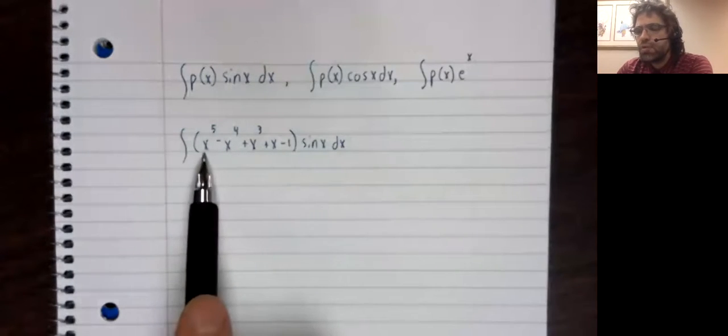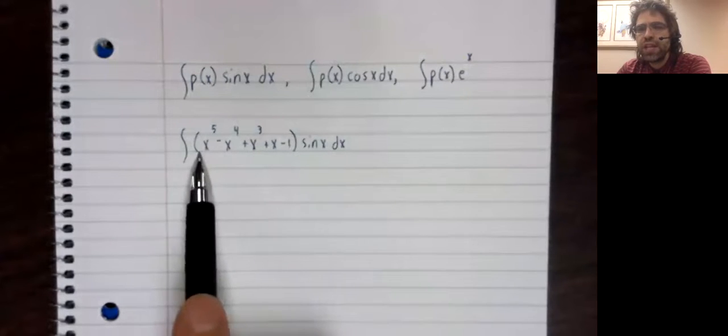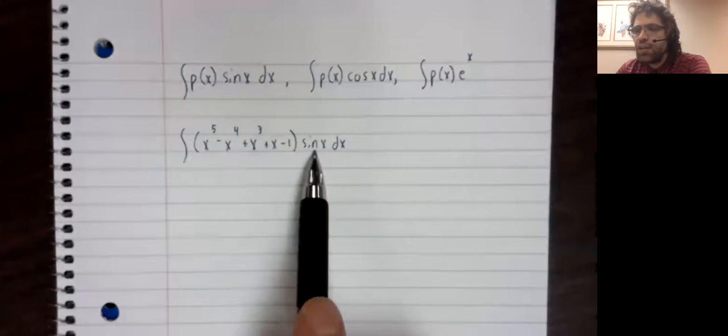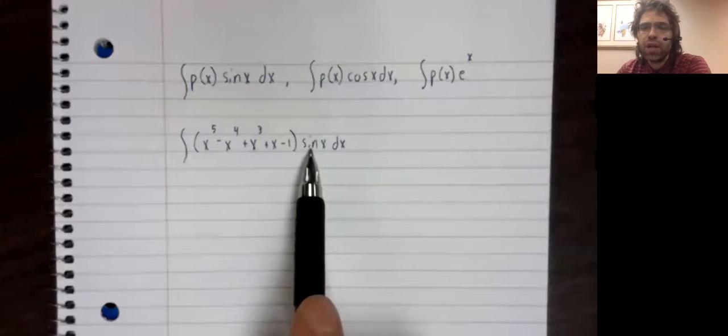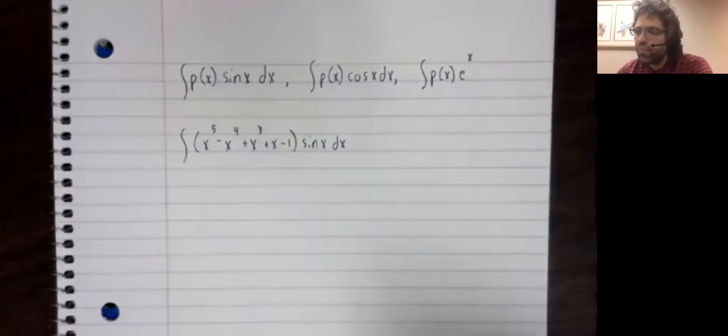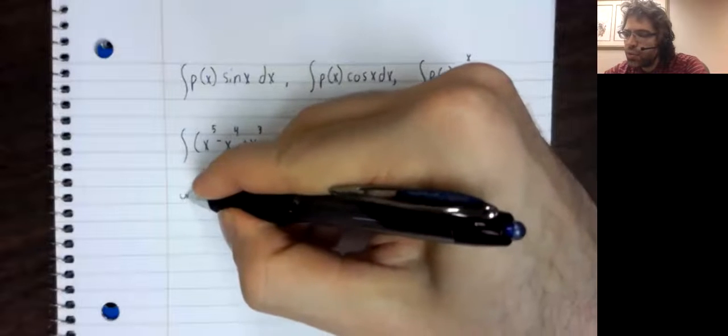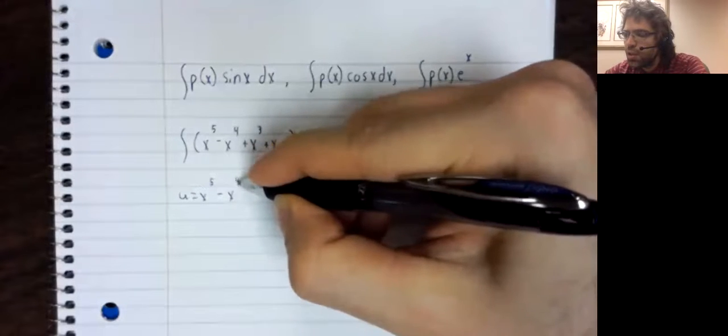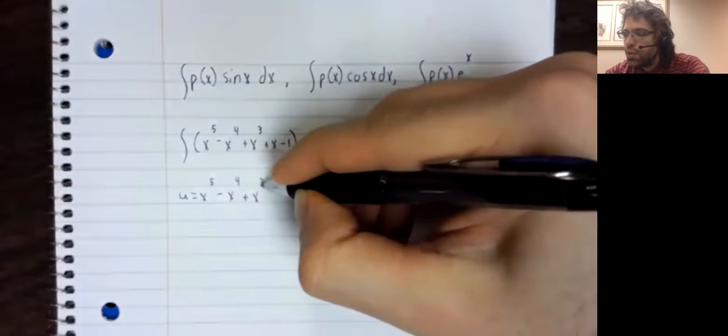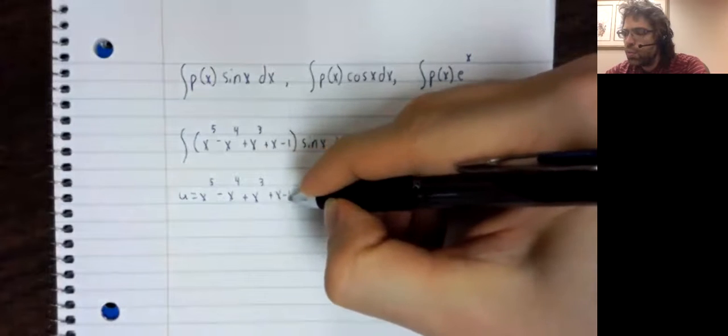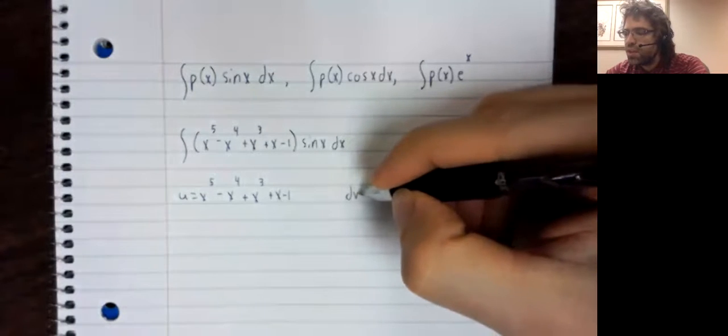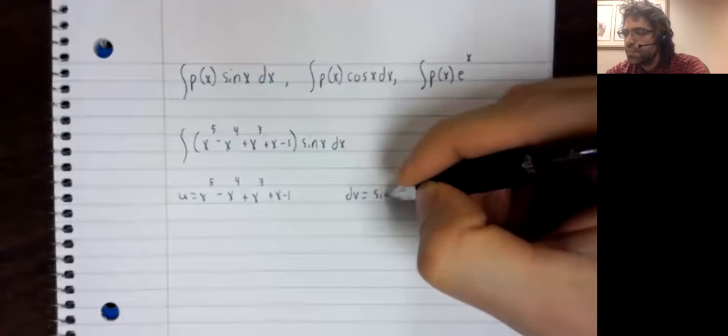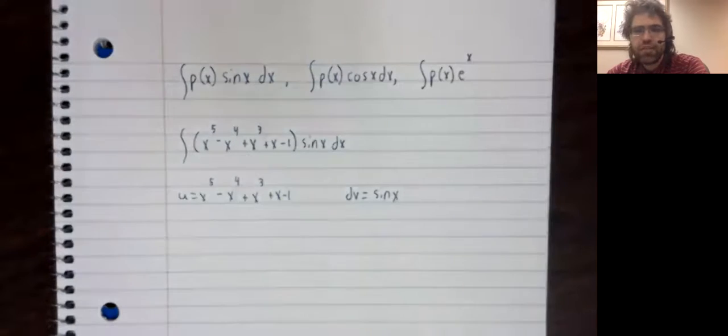You make the observation that this will become simpler when you differentiate, while the sine when you integrate it just gives you a negative cosine that's at least not any worse. So you decide that you're going to use integration by parts, letting u be your polynomial and dv be your trig function.